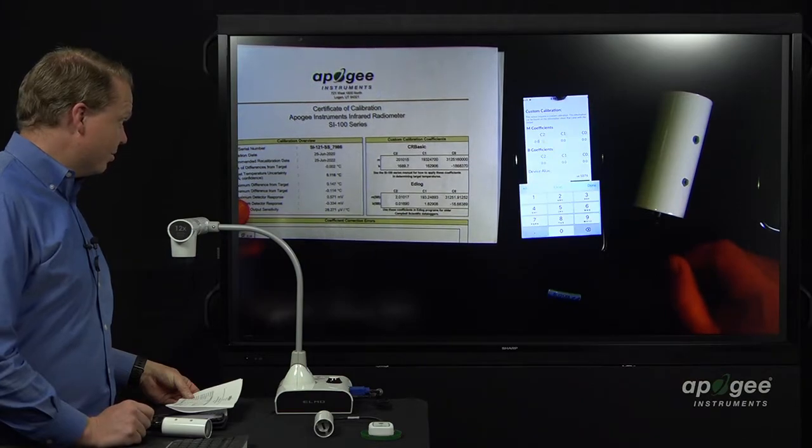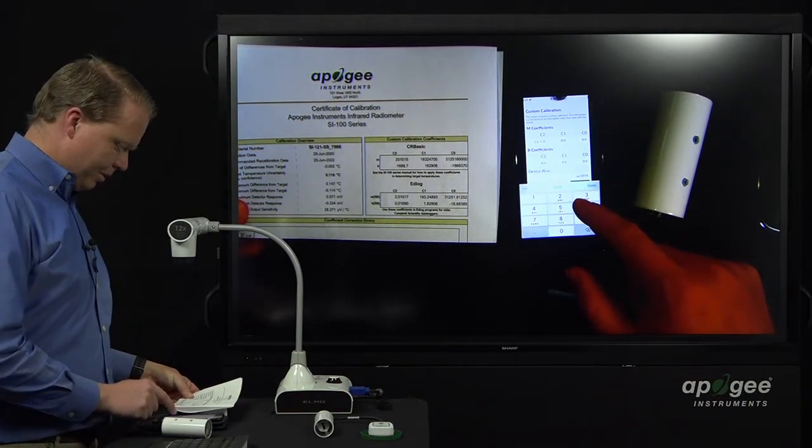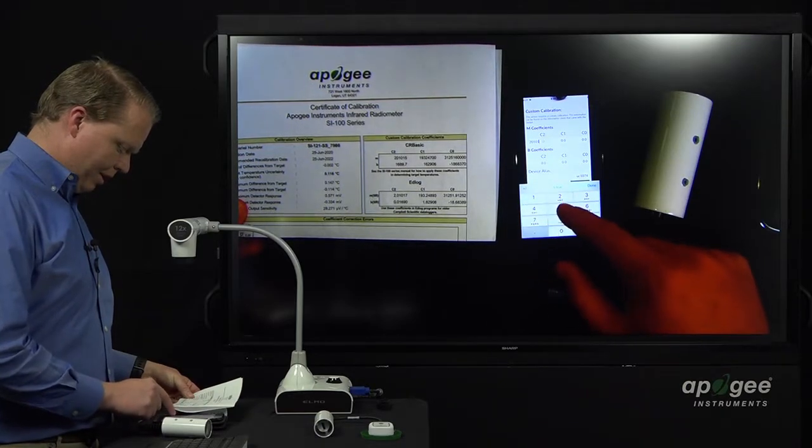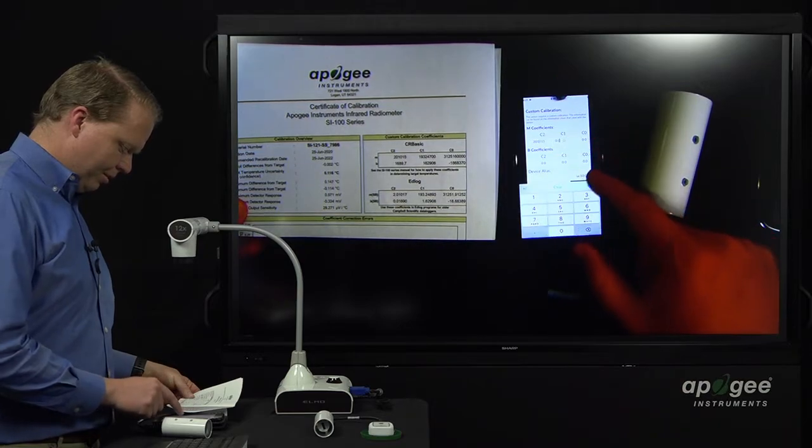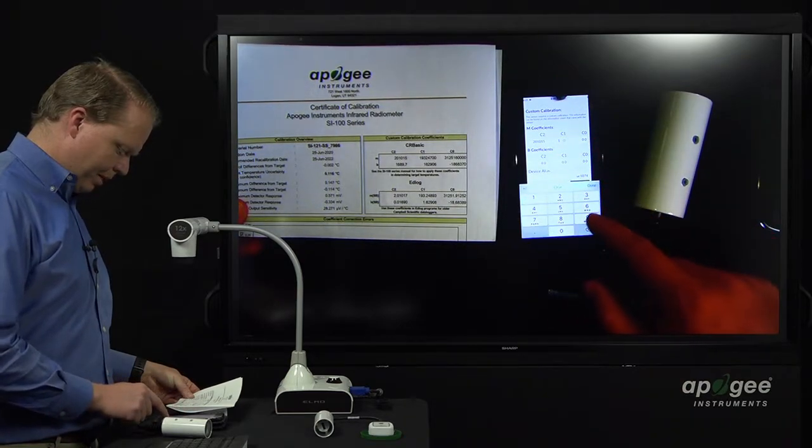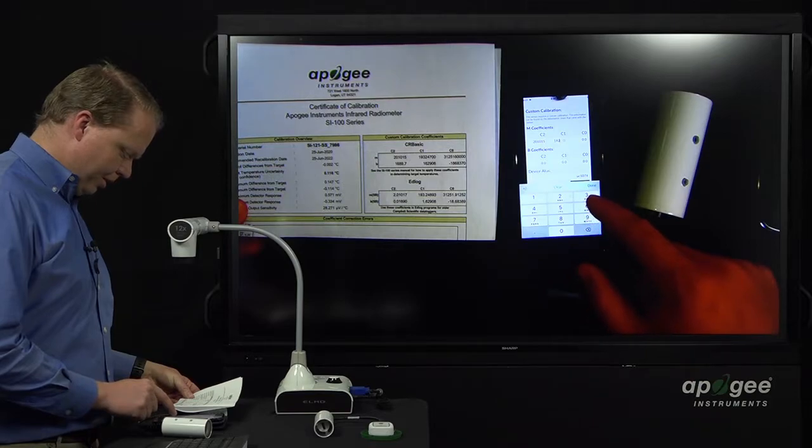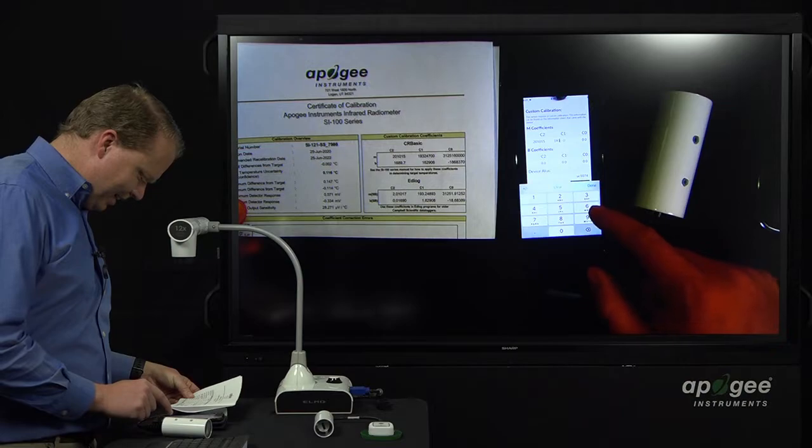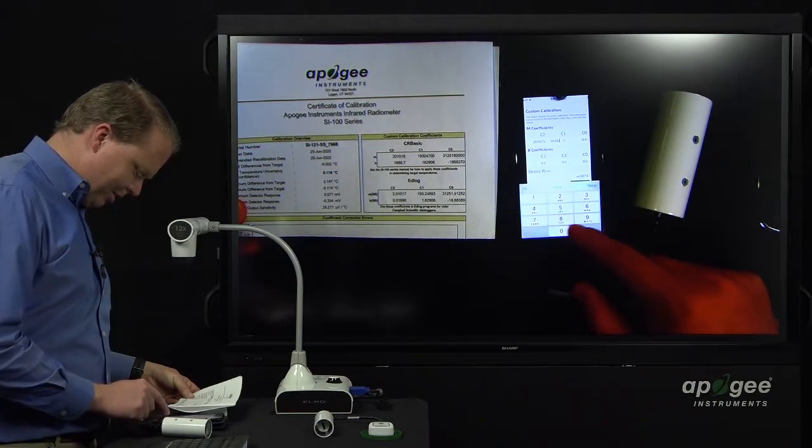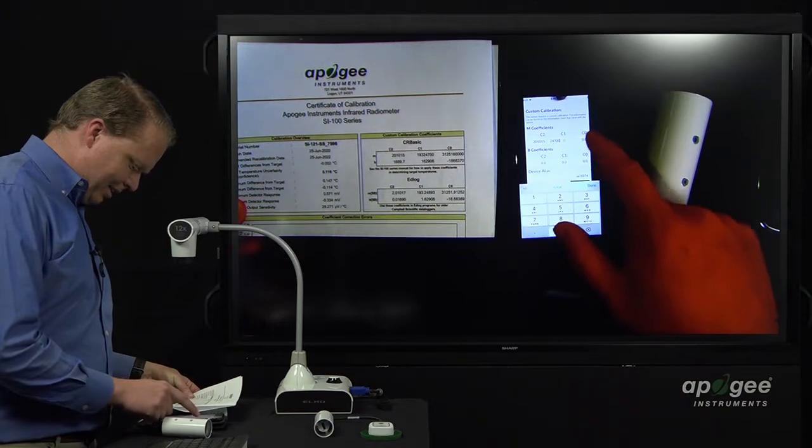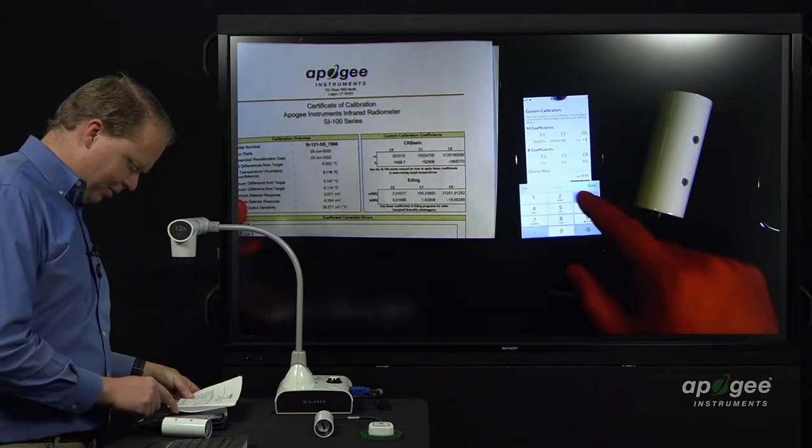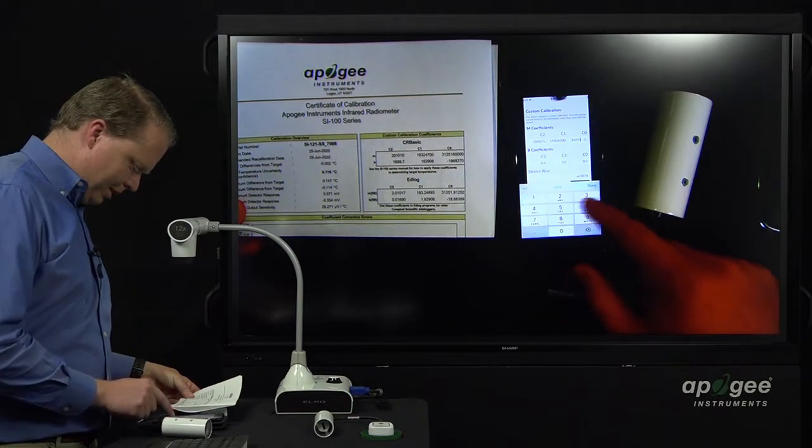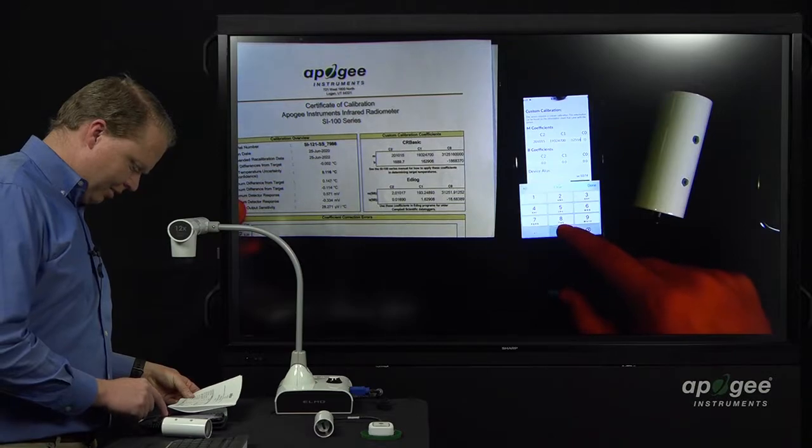For the C2, it says we need, so we'll hit clear, and then we'll do 2, 0, 1, 0, 1, 5. C1, we'll hit clear, 1, 9, 2, 1, 9, 3, 2, 4, 7, 0, 0. Next one, C0, clear that out, and this is 3, 1, 2, 5, 1, 6, 0, 0, 0, 0.